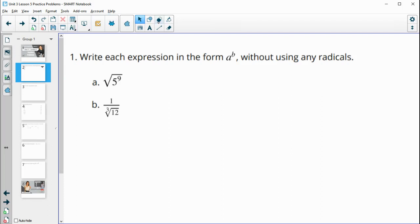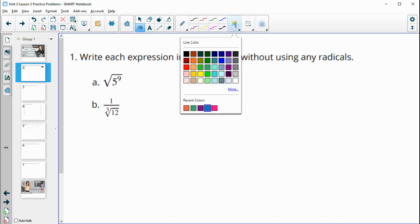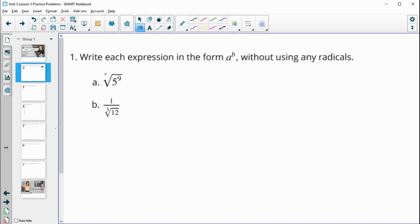Number one asks us to write each expression in the form a to the b power without using any radicals. So in this first one, remember that a square root kind of has a little 2 here. And then that goes to the bottom of the fractional exponents. We have 5 to the 9 halves power here.